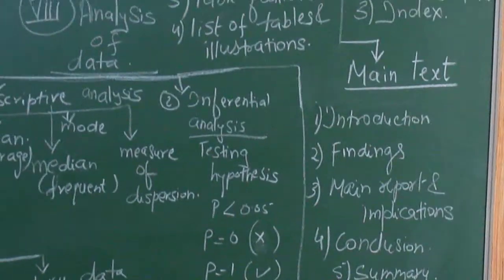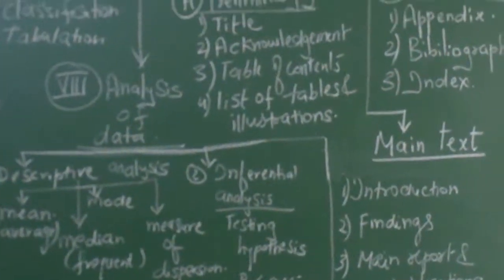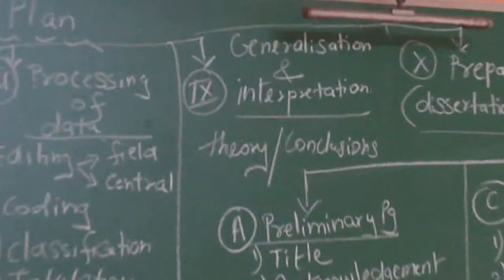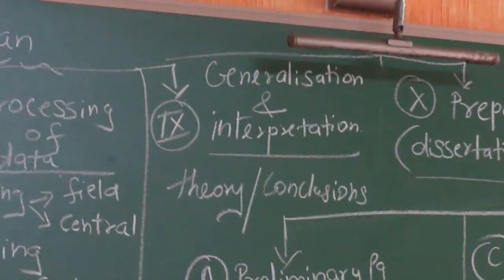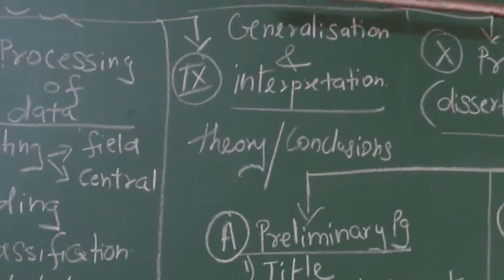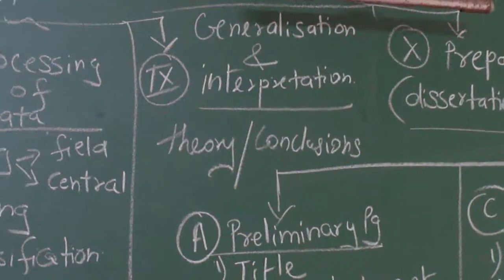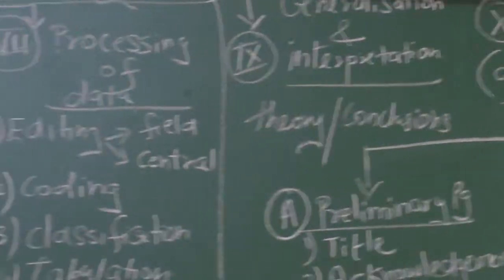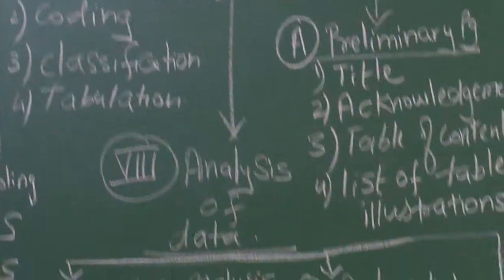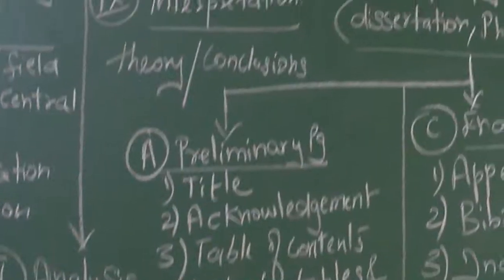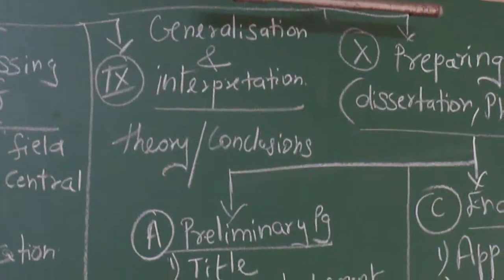Now once you analyze the whole thing, then you go to the ninth one. The ninth one is generalization and interpretation. It can be generalized. In the same situation, will that thing happen again and again? Can you form a theory? Can you come to a conclusion? So if your processing of the data is good and if the analysis of data is good, then on this depends your generalization and interpretation.